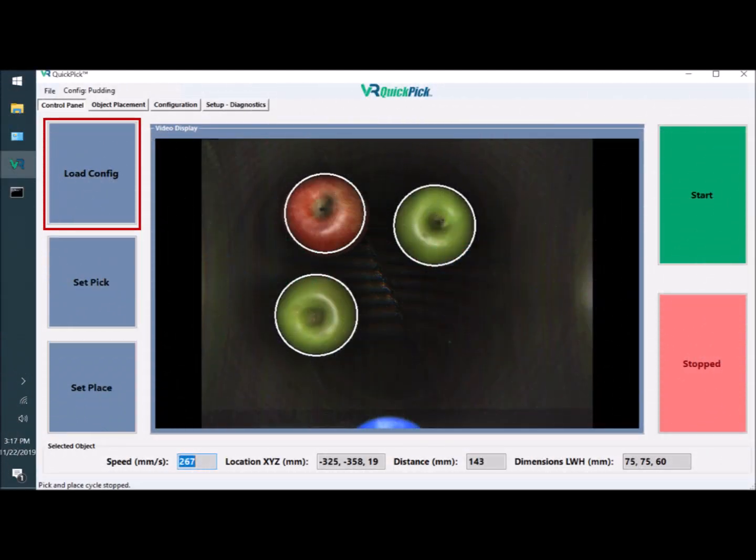VR Quick Pick is simple to operate. With the touch of a single button at the top left of the screen, you load a configuration file that includes camera settings, object detection settings, and robot settings.